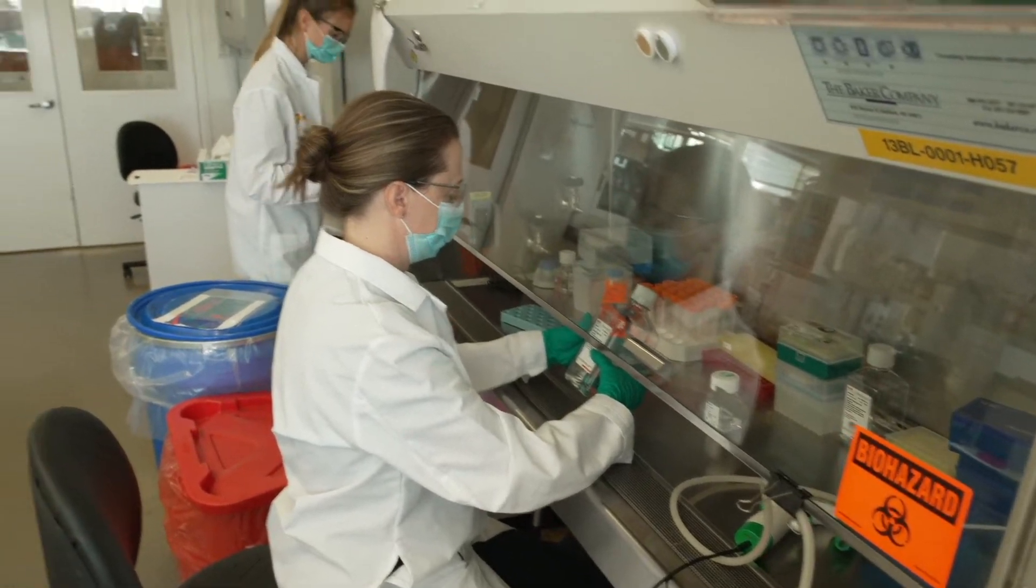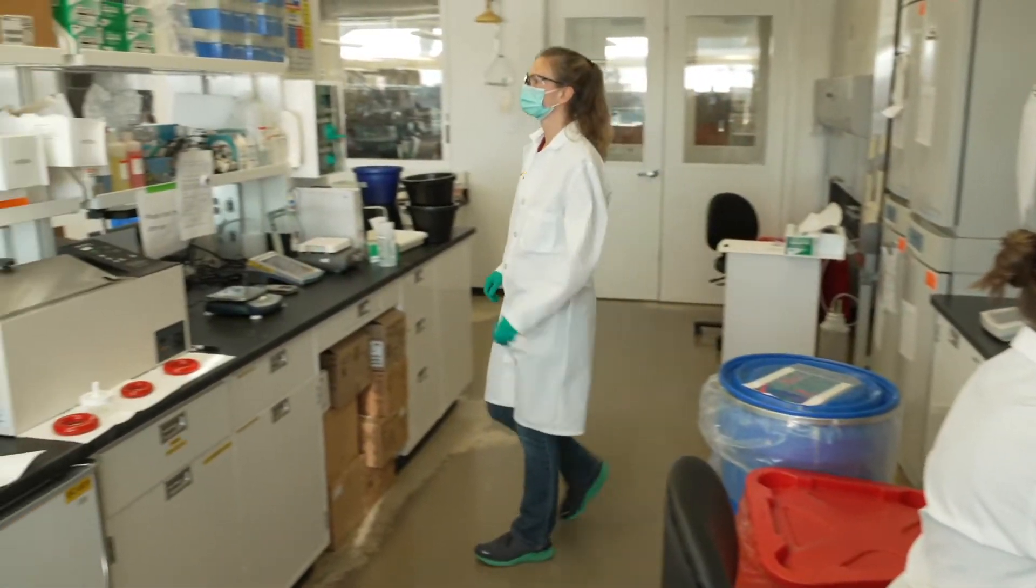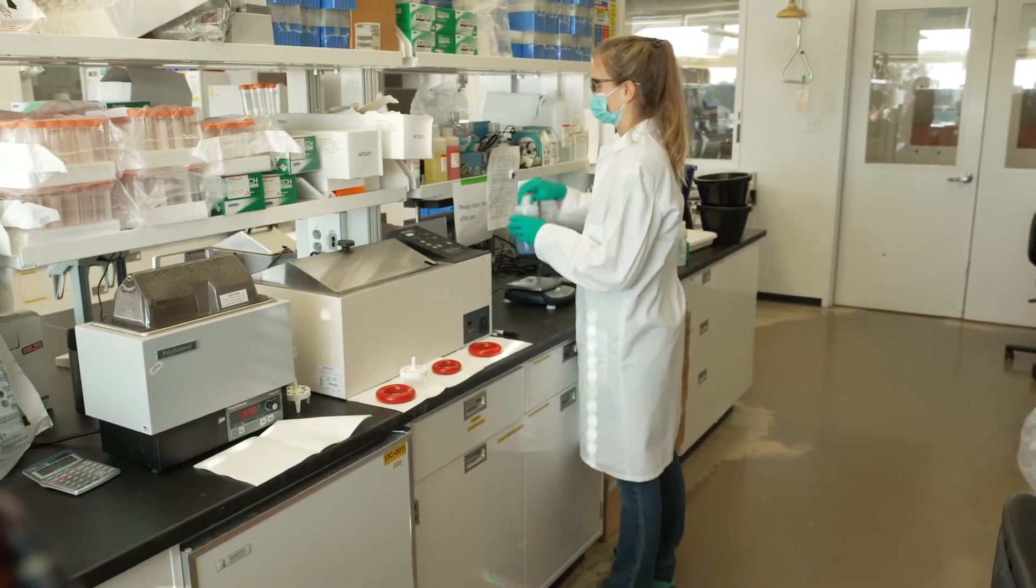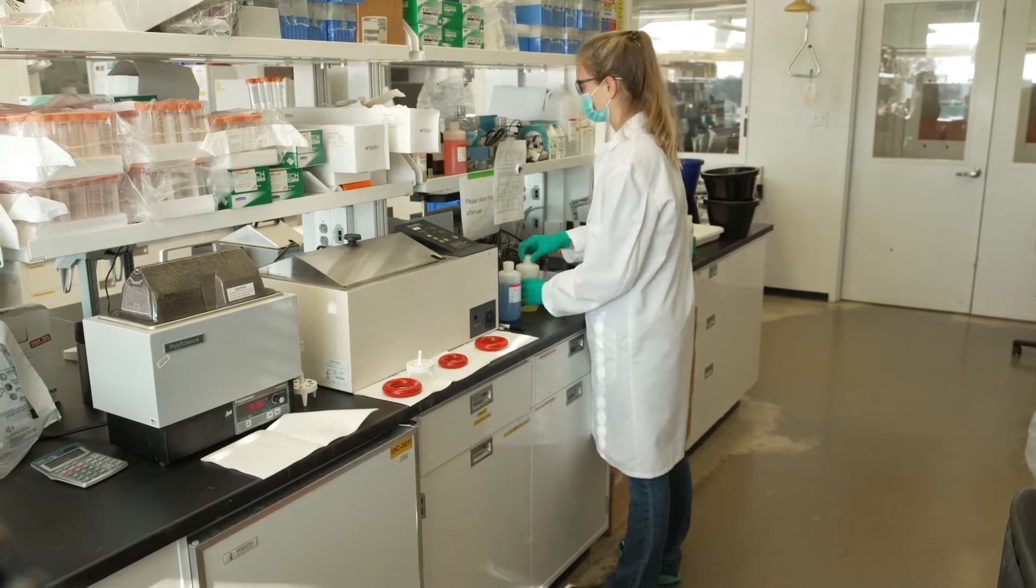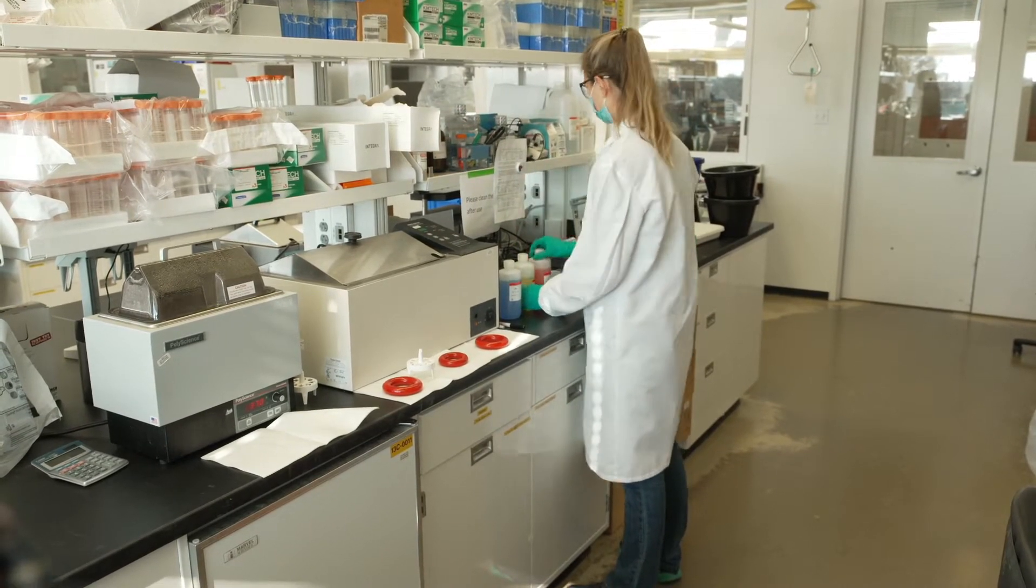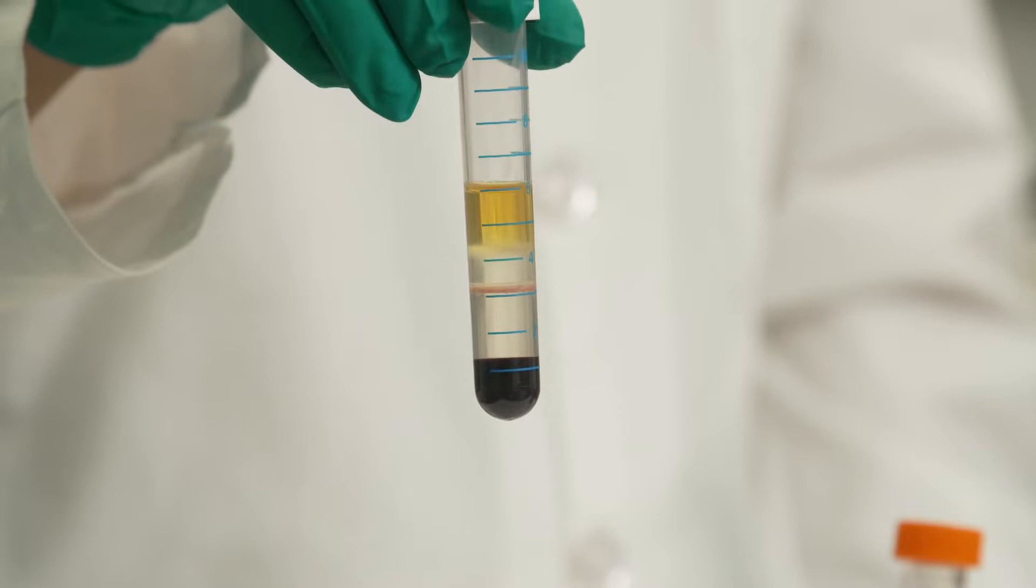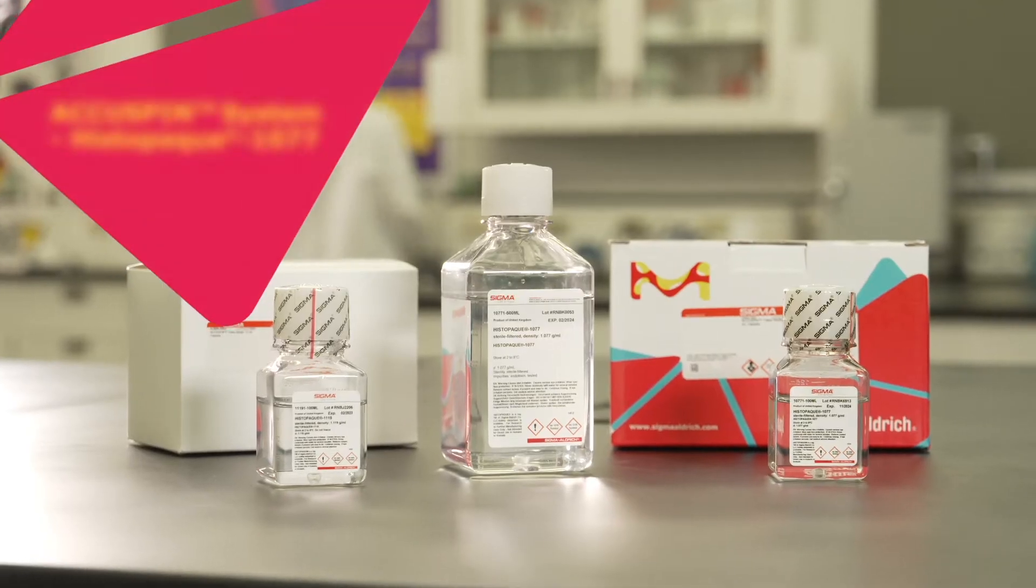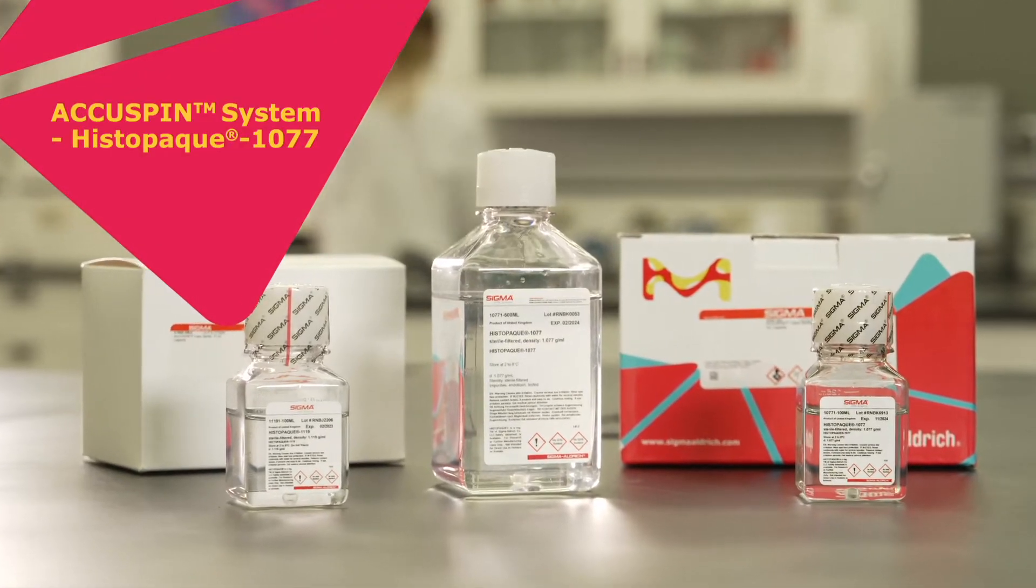For researchers and clinicians seeking a fast, reliable, and efficient method for separating lymphocytes and other nuclear cells from whole blood or bone marrow, a simple and easy to use solution has arrived. The AccuSpin HistoPake 1077 system.